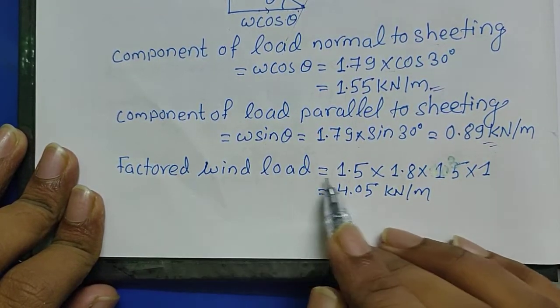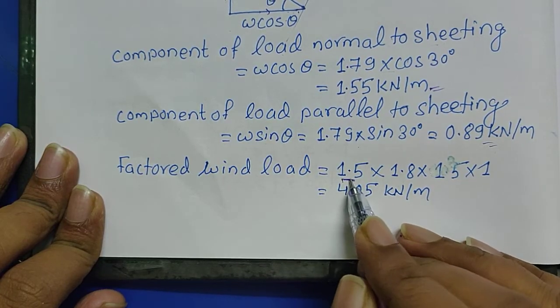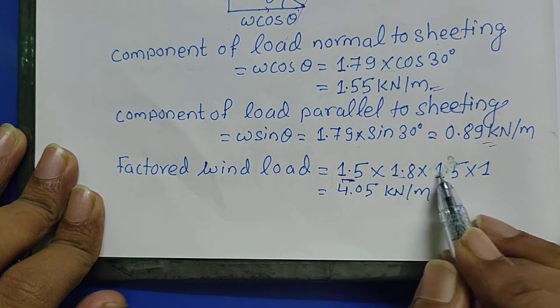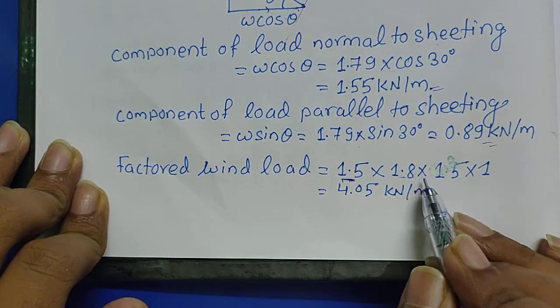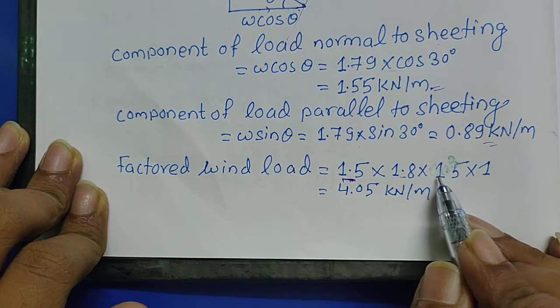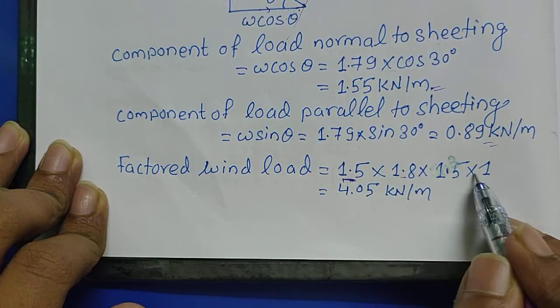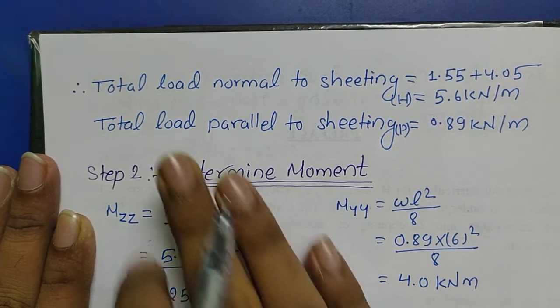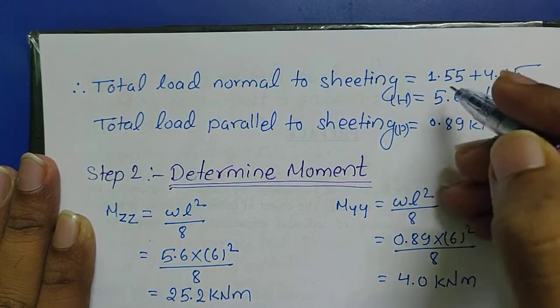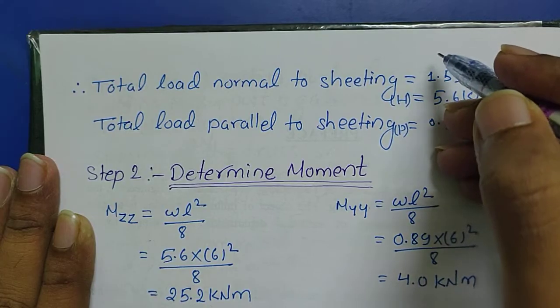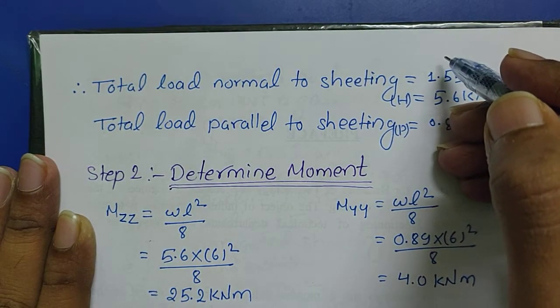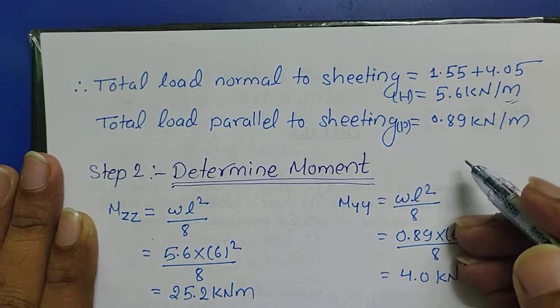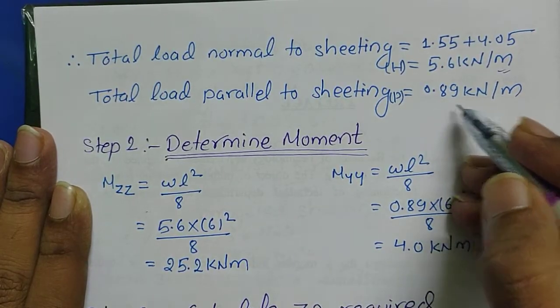I am given wind load in the question. As I said, wind load is acting always normal to the seating. Factored wind load will be, this is our factor 1.5, and load is 1.8 kilo Newton per meter square. I have just taken it as kilo Newton per meter square and our area will be 1.5 into 1, so our load becomes this much. Total load normal to the seating is 5.6 kilo Newton per meter, and the load parallel to the seating will be 0.89 kilo Newton per meter.